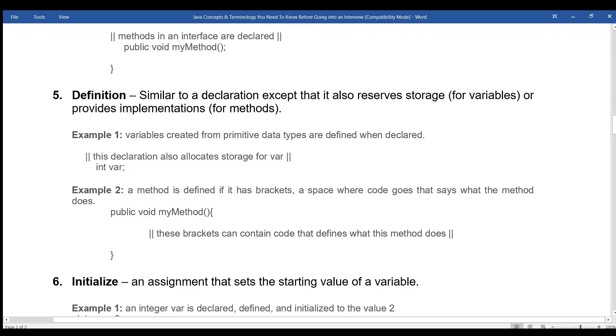Definition: Similar to a declaration except that it also reserves storage for variables or provides implementations for methods. Example 1: variables created from primitive data types are defined when declared. This declaration also allocates storage for var: int var. Example 2: a method is defined if it has brackets, a space where code goes that says what the method does. public void myMethod. These brackets can contain code that defines what this method does.